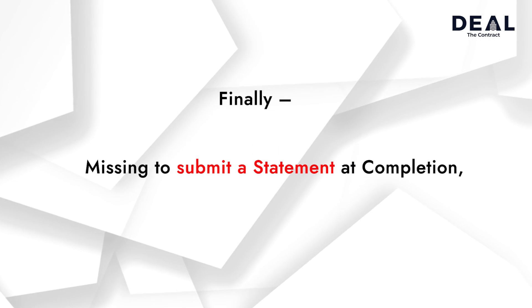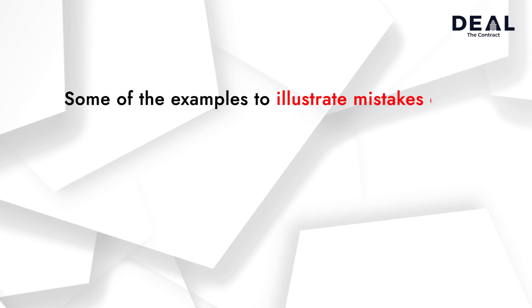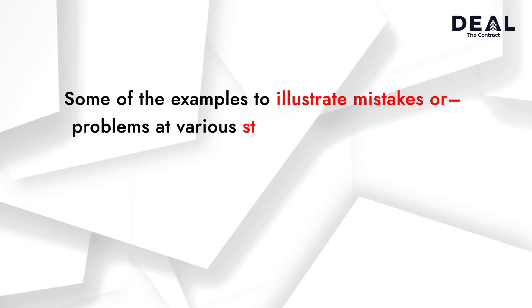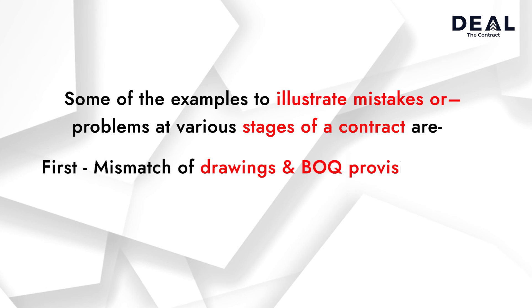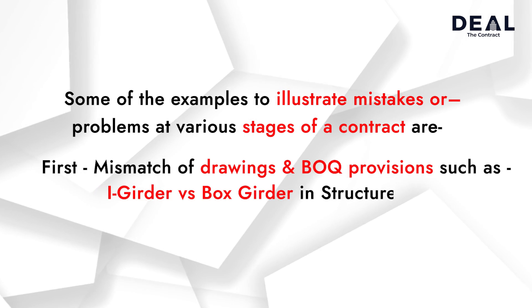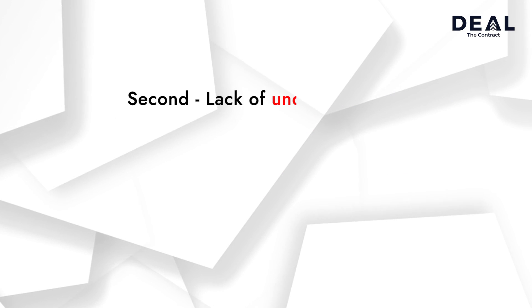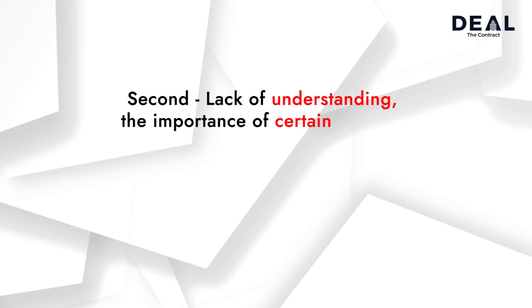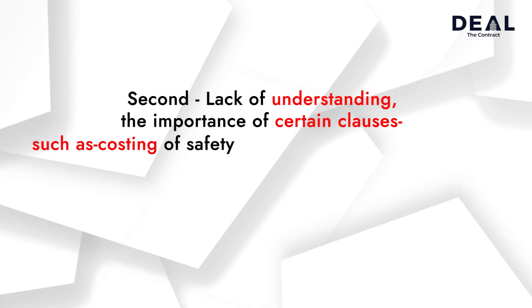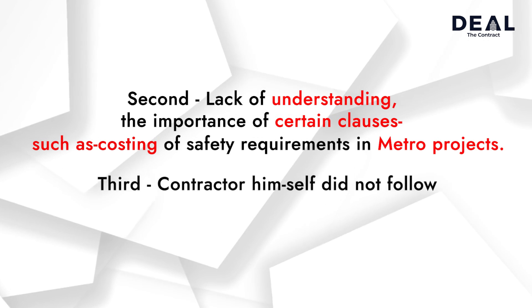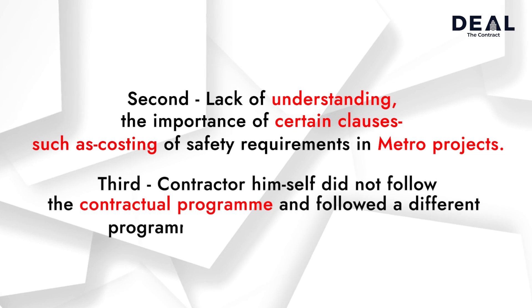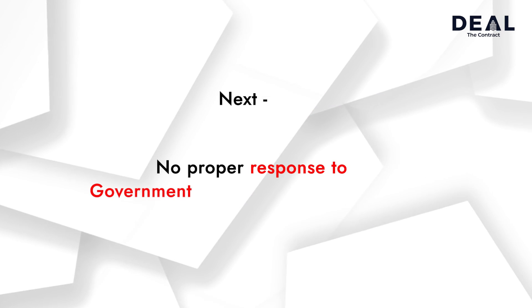Finally, missing to submit a statement at completion, which is normally called the final bill. Some examples illustrating mistakes at various stages of a contract are: 1) mismatch of drawings and BOQ provisions, such as high girders vs. box girders in structures; 2) lack of understanding the importance of certain clauses, such as costing of safety requirements in metro projects; 3) the contractor himself did not follow the contractual program and followed a different program, which creates problems; 4) no proper response to government authorities' correspondence.